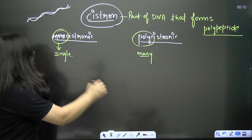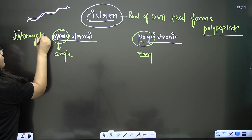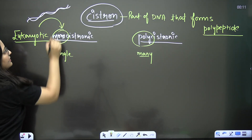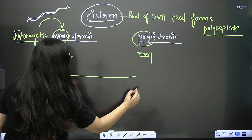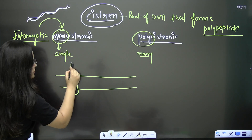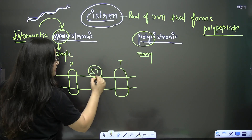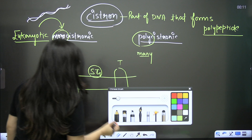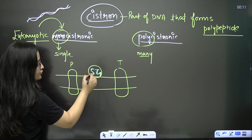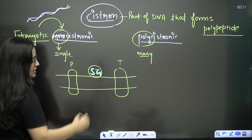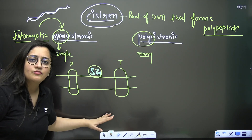In a eukaryotic cell, we are monocistronic: one promoter, one terminator, one structural gene. One RNA polymerase transcribes the structural gene, producing one mRNA that forms one polypeptide chain.